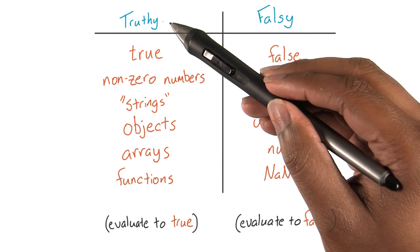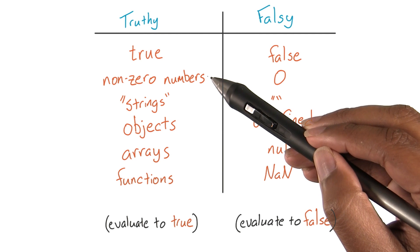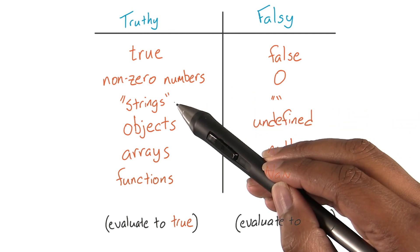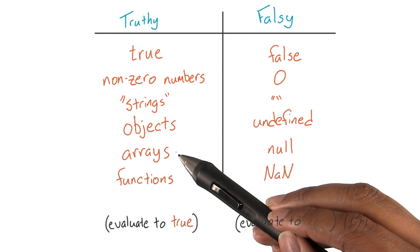Under truthy, we've got true, non-zero numbers, strings with a length of at least one, objects, arrays, and functions.